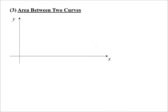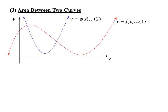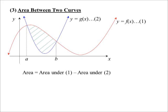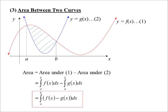What happens when we trap an area between two different curves? There's one curve f(x) and another curve g(x), and we want the area between them. We find the points of intersection, then recognize: I know how to find the area under the red one, and under the blue one — I just subtract. So it becomes the integral from a to b of f(x) minus the integral from a to b of g(x), which combines into the integral of f(x) minus g(x) dx.